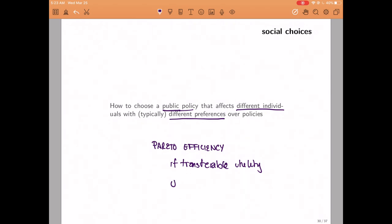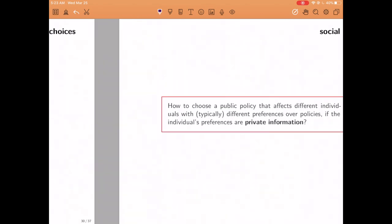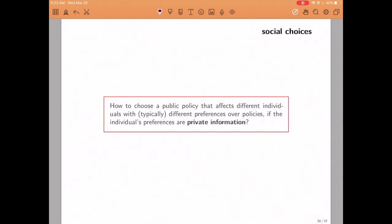There is a problem with doing that, however, which is that we need to know what are the utility functions of different individuals. In general, it is very often the case that each individual knows their own utility, but we as a society do not. The problem we are going to try to solve for the rest of the semester is how to make social decisions that affect a number of people when the preferences of these individuals are private information to them.